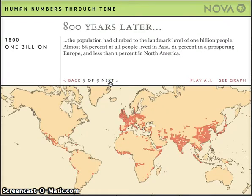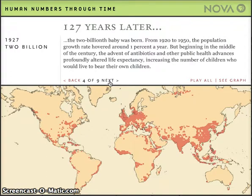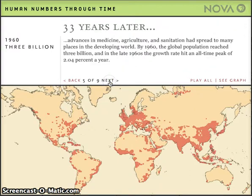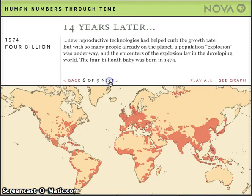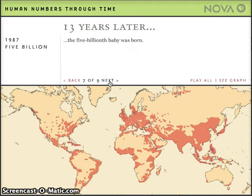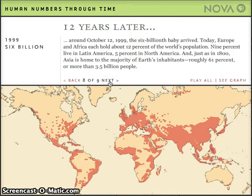It takes only about 2,000 years for human population to reach 1 billion, but just over a century to reach its second billion. The third, fourth, fifth, and sixth billions each occur at rates of only about a dozen years.